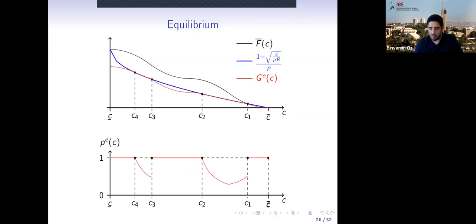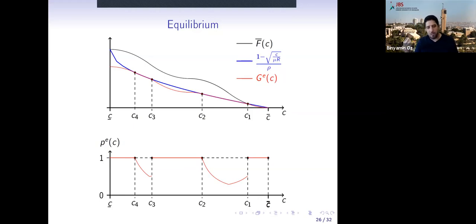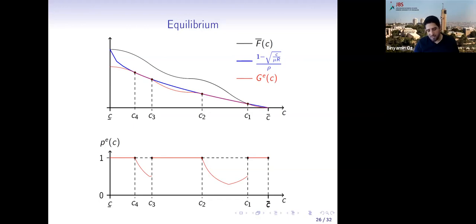Returning to the hospital story: what happens is not that only mild-condition or only severe-condition patients go to the public hospital — everyone goes to the public hospital with some probability. Those who go to the private hospital tend to come from the middle of the condition distribution, not the most severe and not the mildest. This might be a nice explanation for what is often observed in practice.